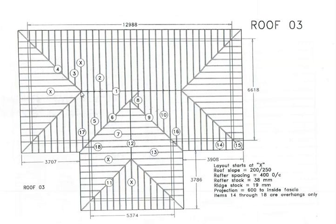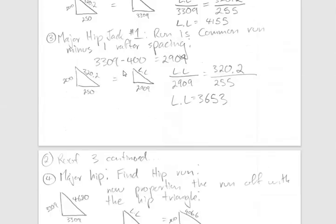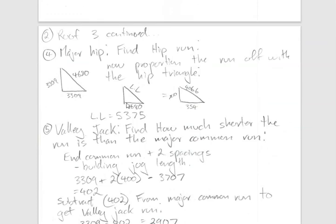Now we get to the hip, which runs at 45 degrees from the building lines, so we use the hip ratio triangle. Our first step is to figure out the total run of the hip. Because it's a 45-degree angle, the run in each direction equals the run of the common, and the hypotenuse of those two distances is the run of the hip. We proportion that against our hip triangle and our math comes out to 5375.